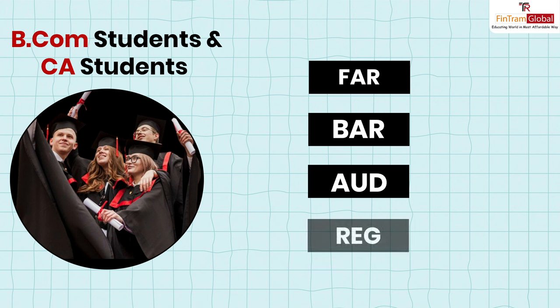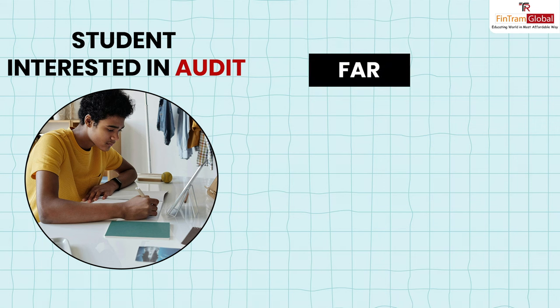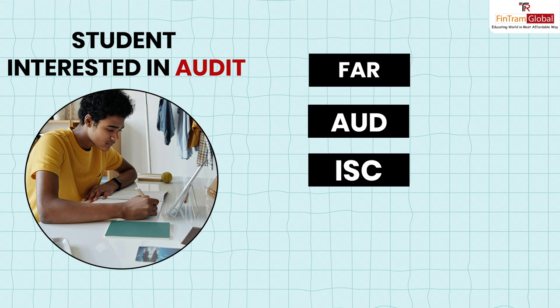The fourth subject would then be Regulation. However, for folks who are not inclined towards Financial Accounting and Reporting and are more interested in Audit, they should choose FAR first, then Audit, and then — in relation to Audit — choose ISC (Information Systems and Control) from the discipline subjects, and then give Regulation.